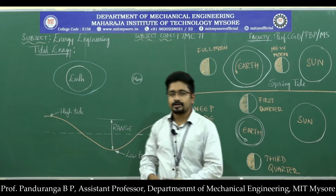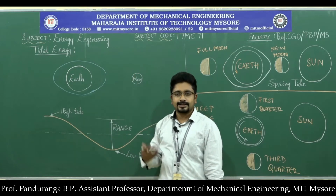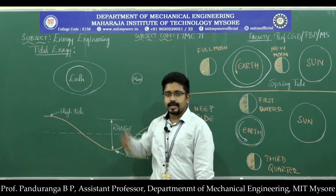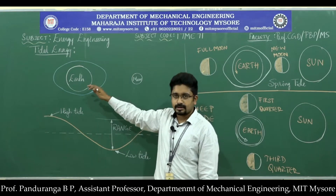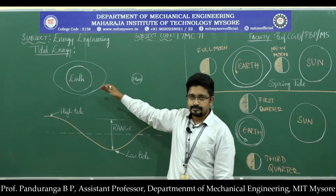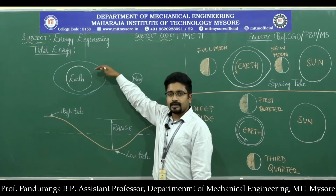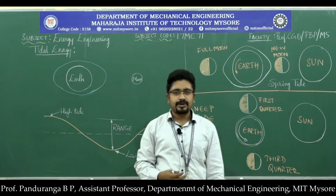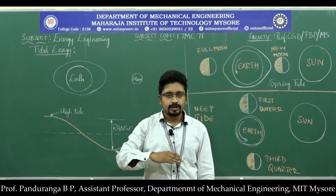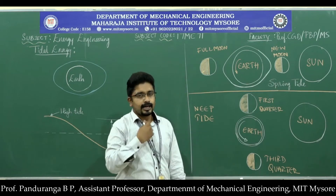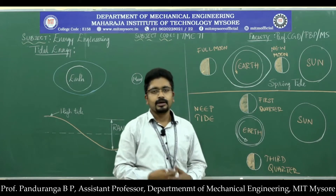That deformation creates a pull towards the moon, and in the same way a pull is also created in the opposite direction. Because of this, the water level near the moon and on the far end of the earth gradually increases. As the moon and earth rotate, it gradually reduces. This occurs over a duration of 12 hours 25 minutes, cyclically over the day. This rise and fall of ocean water level can be captured by constructing an artificial dam to store water during high tide and discharge it through a turbine during low tide to produce mechanical energy.